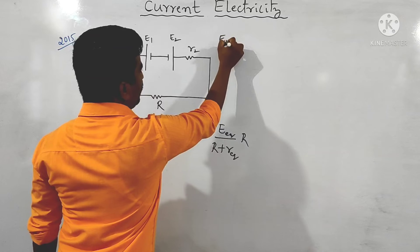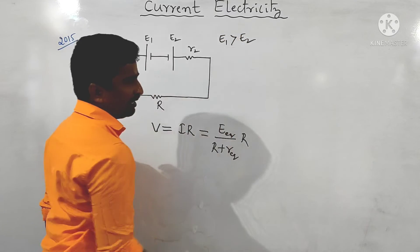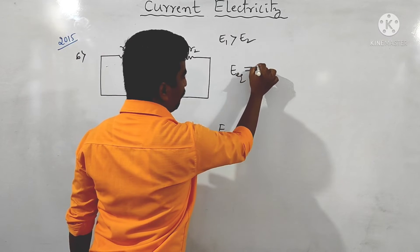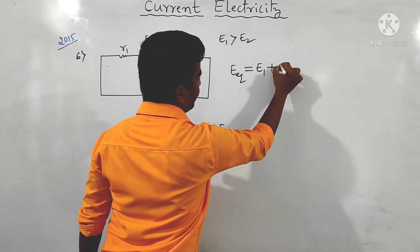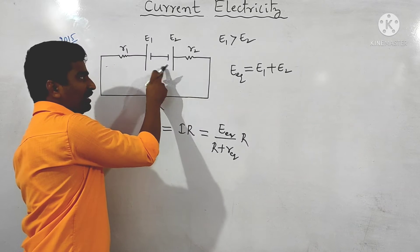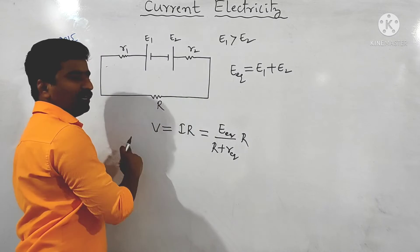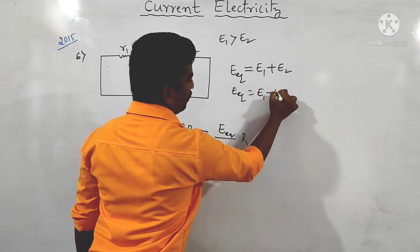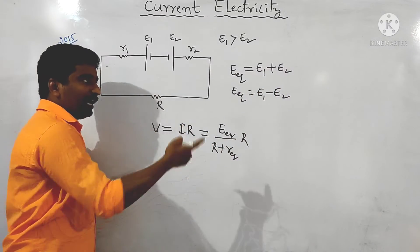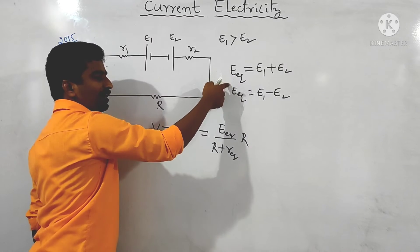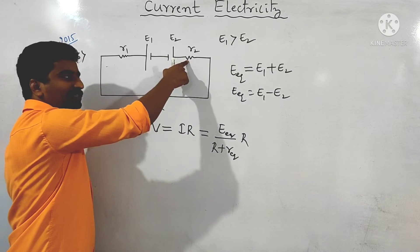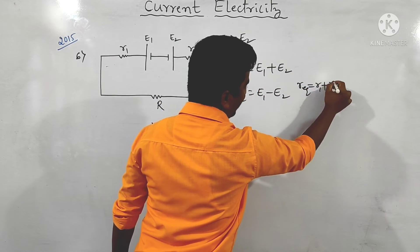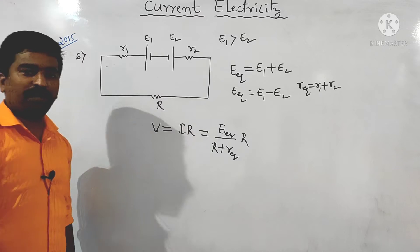They are given e1 is greater than e2. When cells are connected correctly, E equivalent equals e1 + e2. When connected wrongly (in opposition), E equivalent becomes e1 − e2. In both cases, the effective internal resistance R equivalent equals R1 + R2.